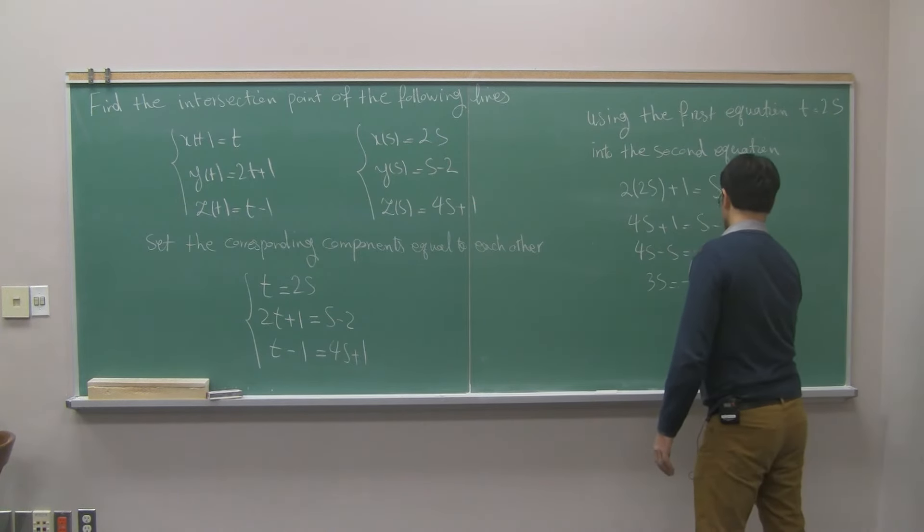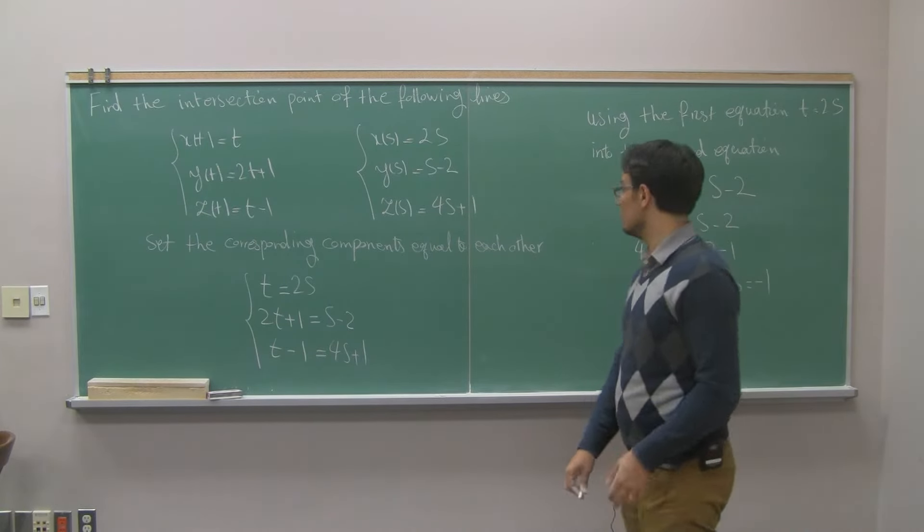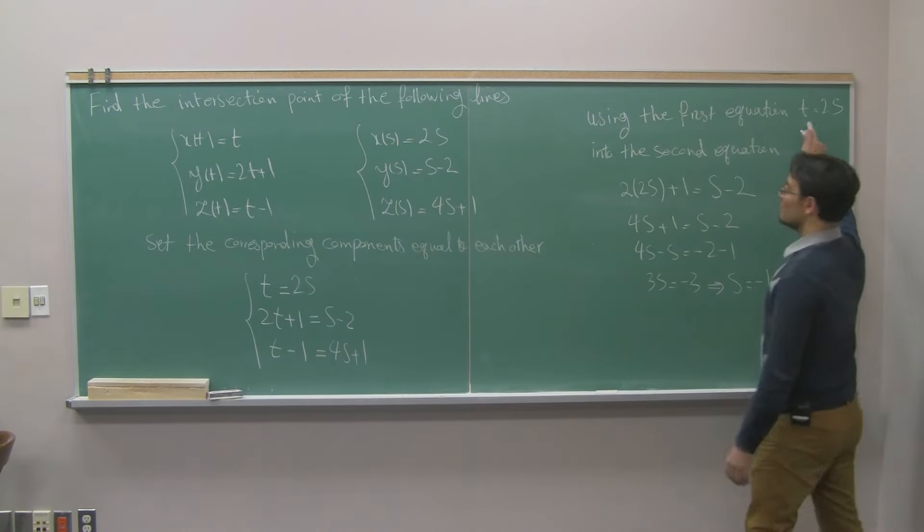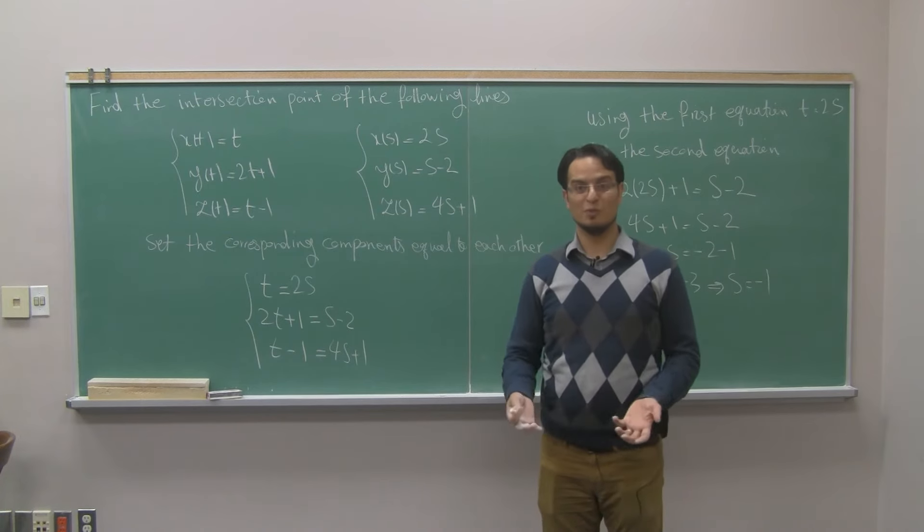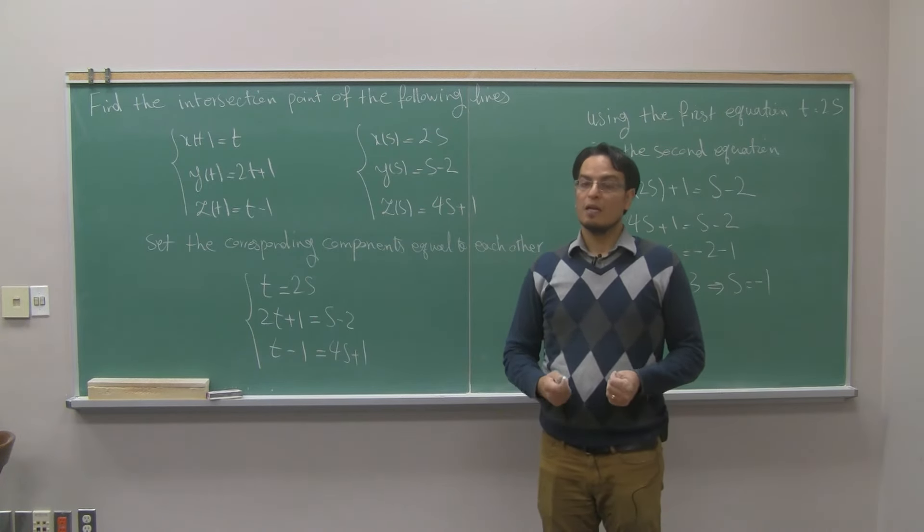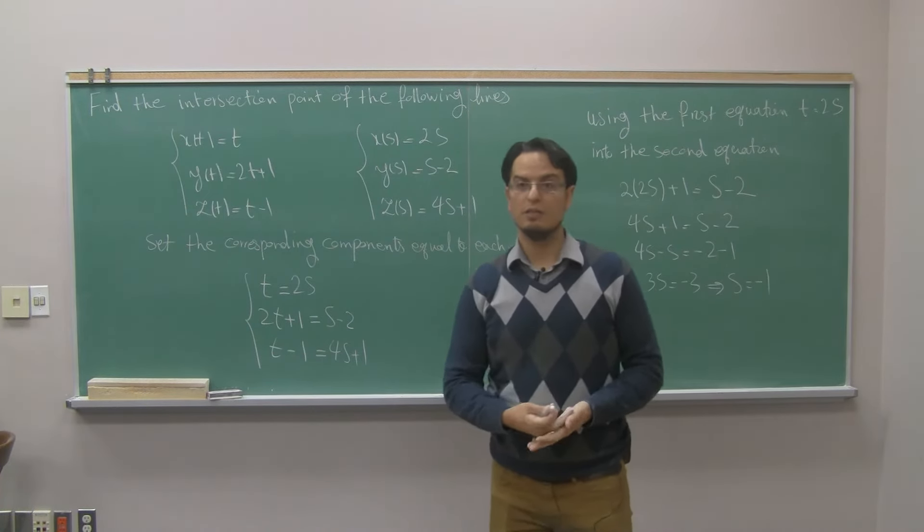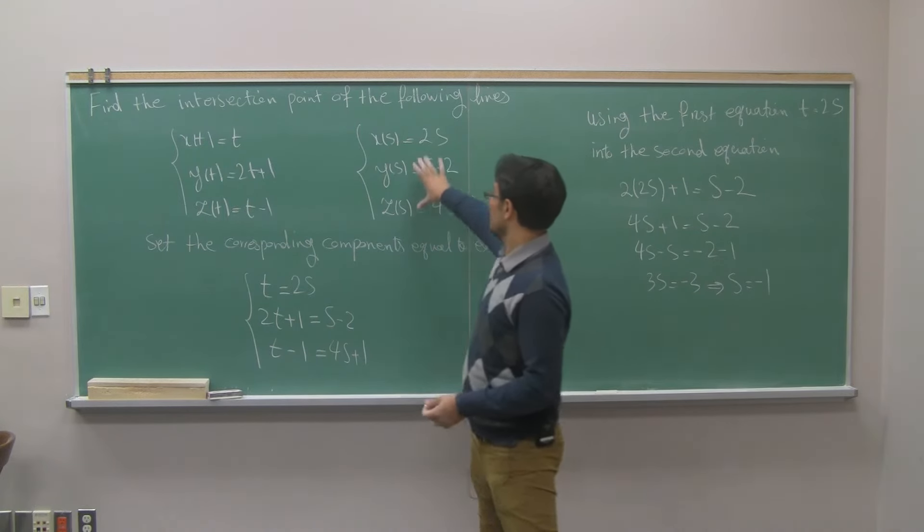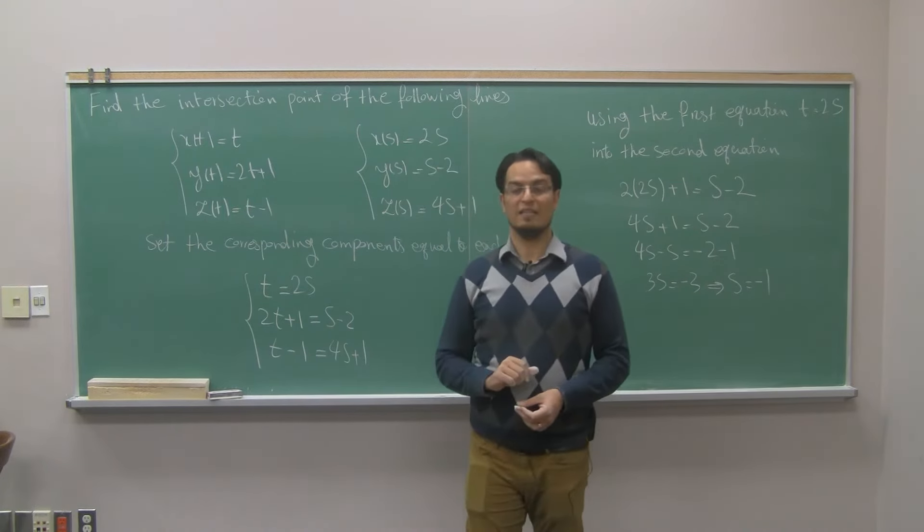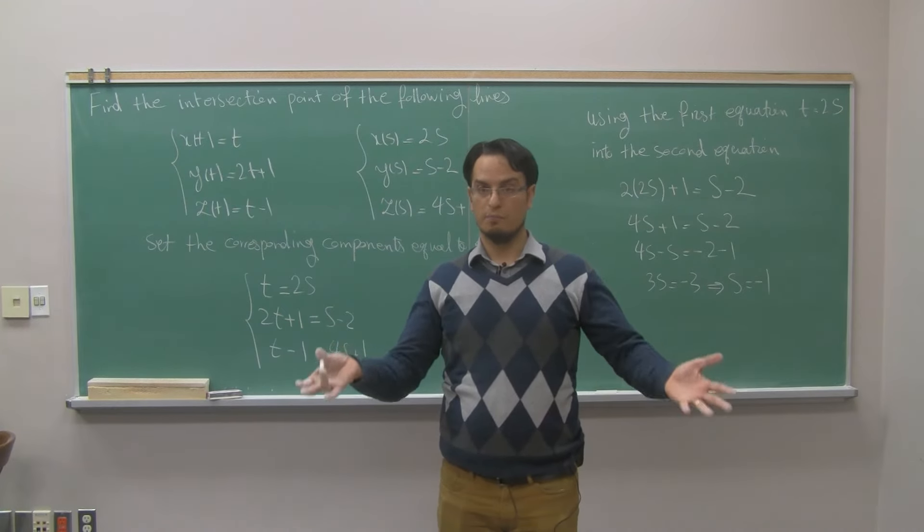Means that s is negative 1. Well, I found s is negative 1, then it will give me t also negative 2, because t is twice as s. In this question, since we know that two lines are intersecting, then we don't need to do anything more. So just plug in s in the parametric equations written in terms of s. That will be the intersection point.